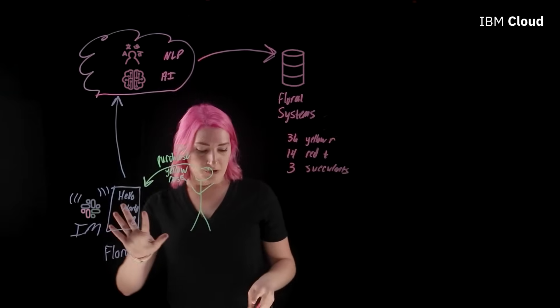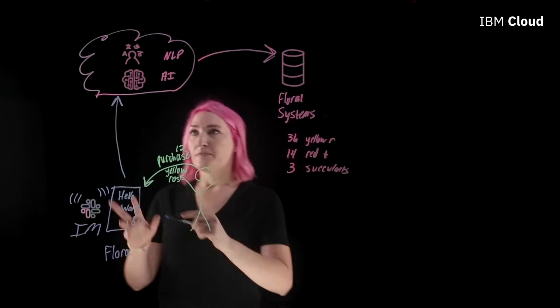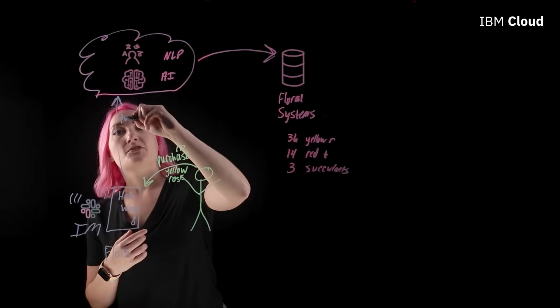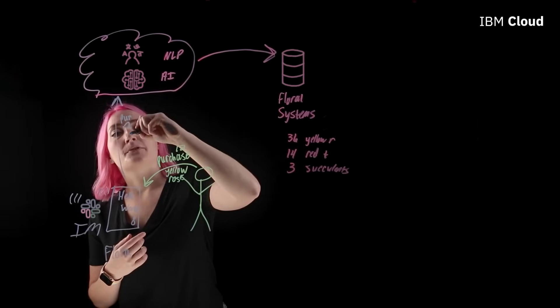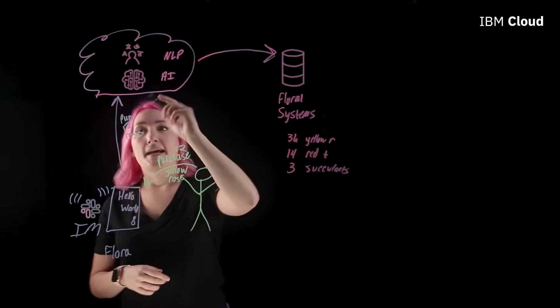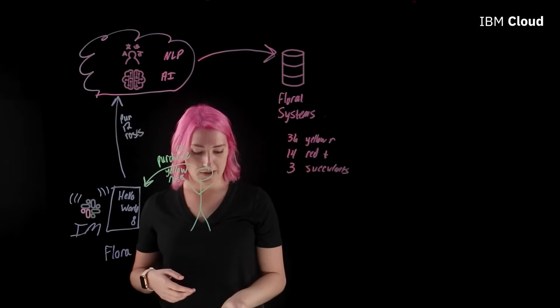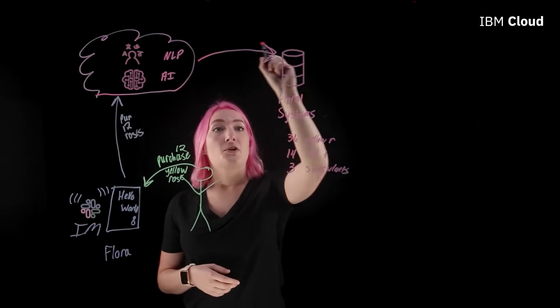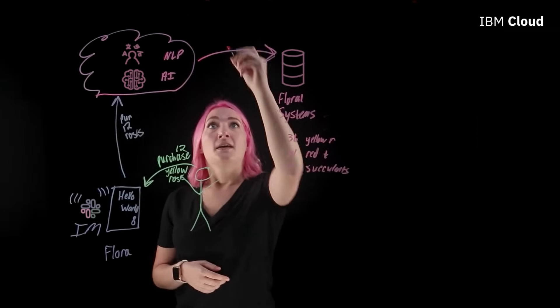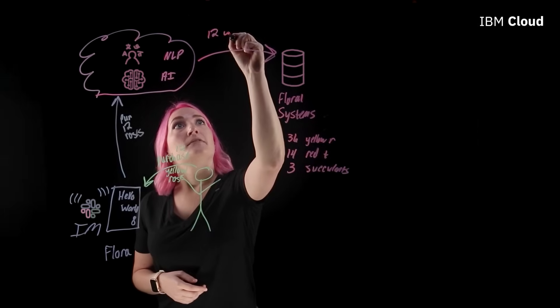So I've sent this information to the webpage already as the user. Now the webpage is going to say, all right, purchase and then twelve roses, yellow roses. Now this is going to send this information to the cloud, to my chatbot service provider. And then that is actually going to go out here and check the database. So I'll say twelve yellow roses is what we're looking for.